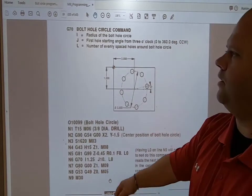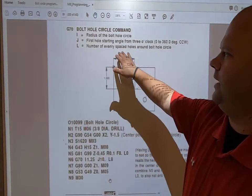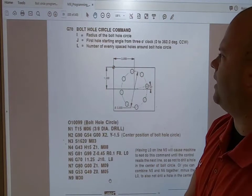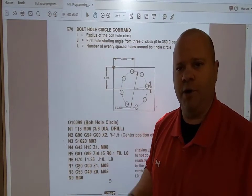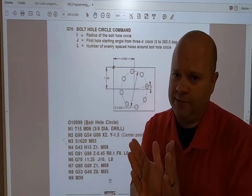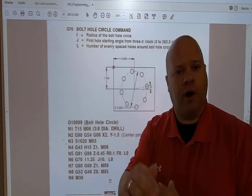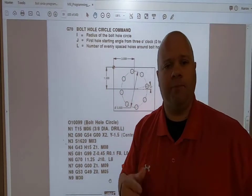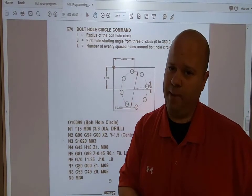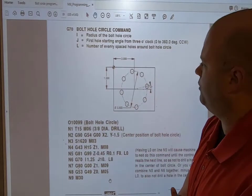L is the number of evenly spaced holes around the bolt hole circle. There are other codes in this book that show how to do unevenly spaced gaps or just an arc. However, on this example, we're doing a bolt hole circle with evenly spaced bolt holes.